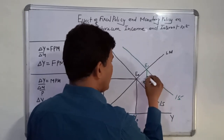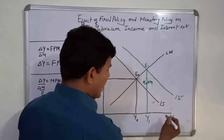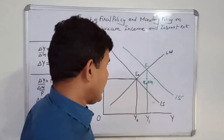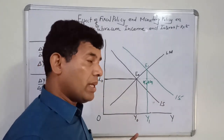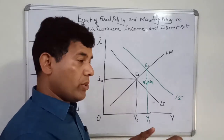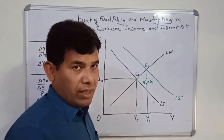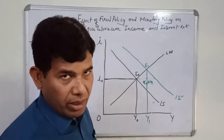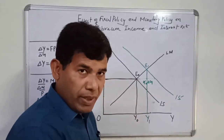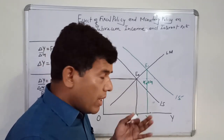At E1, equilibrium income has gone up on account of rising government expenditure. So you can see the power of government expenditure in raising the level of GDP in the economy. If you assume that all other factors remain constant, rise in GDP would also lead to rise in employment. This is where the role of government expenditure policy comes in influencing economic activities in the economy.